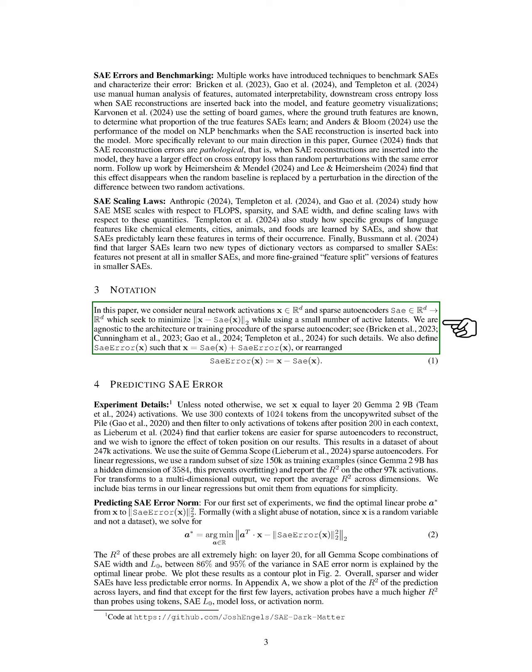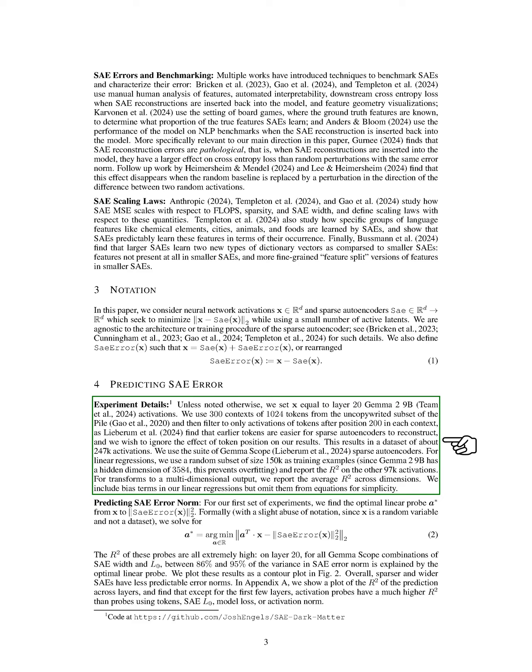Section Notation. In this section, we consider neural network activations represented as vectors in a D-dimensional space and sparse autoencoders that aim to minimize the difference between the original activations and their reconstructed versions, while using a limited number of active latent variables. For our experiments, we set the activations to those from layer 20 of the Gemma 2 9b model. We utilize 300 contexts, each containing 1024 tokens from the uncopyrighted portion of the Pile dataset, filtering to include only the activations of tokens after the 200th position, resulting in approximately 247,000 activations.